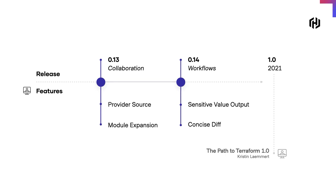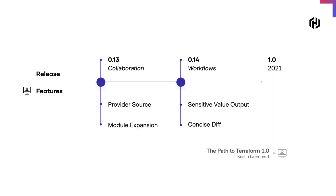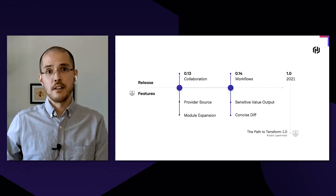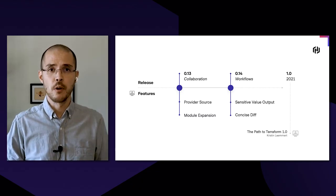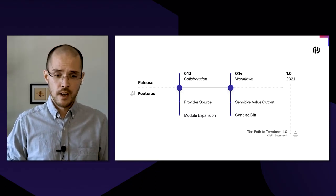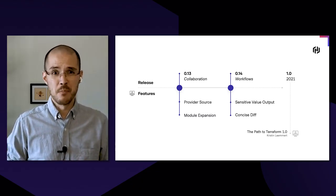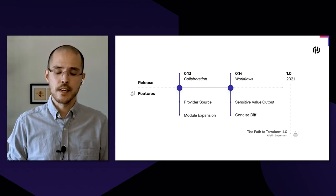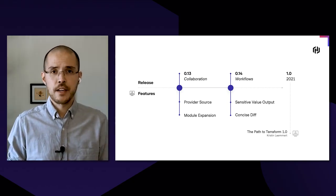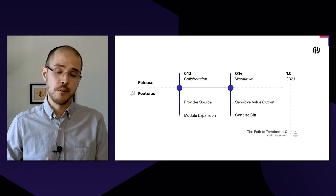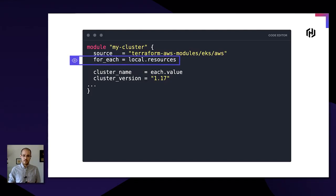I'm always excited to hear what you think about those features. After that, we're going to take the necessary stability steps towards 1.0 in the future. Whether there will be another major release after 0.14 is hard to say right now — I'd recommend checking out Kristin's talk for more details. That being said, I want to talk about some of my favorite features from the 0.13 GA. Module foreach and module count functions were at the top of the list of things we wanted to work on after 0.12.